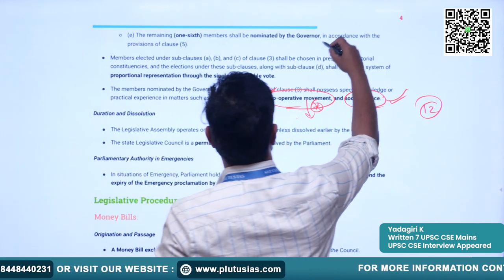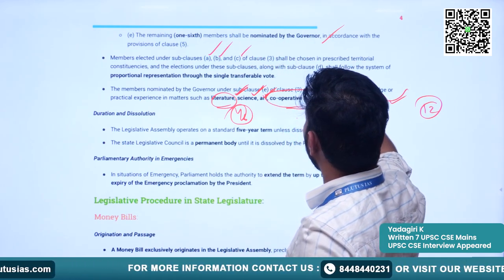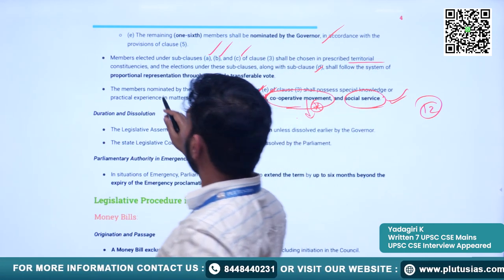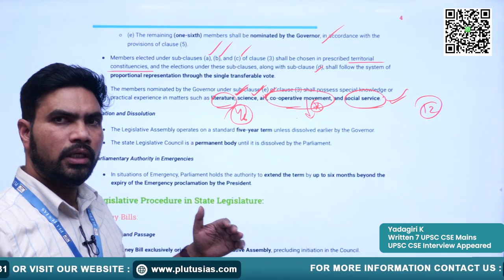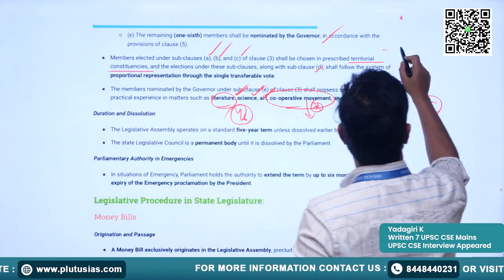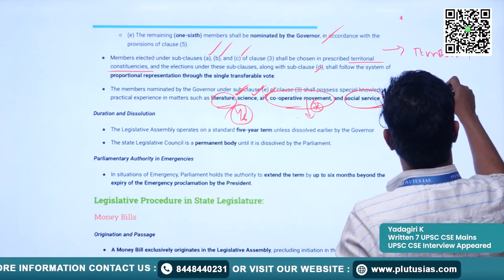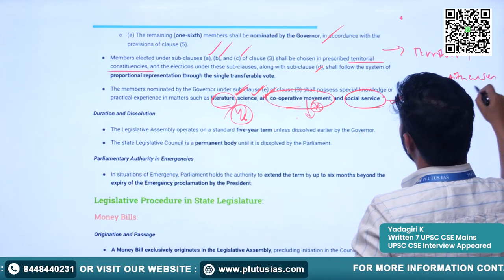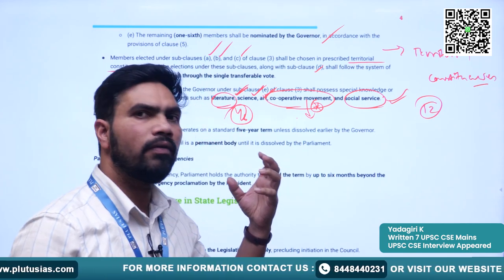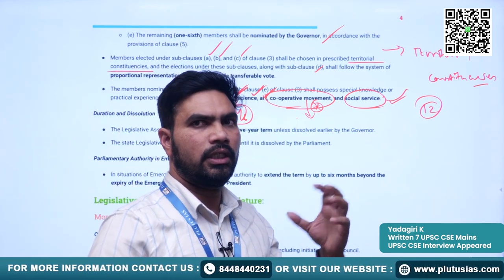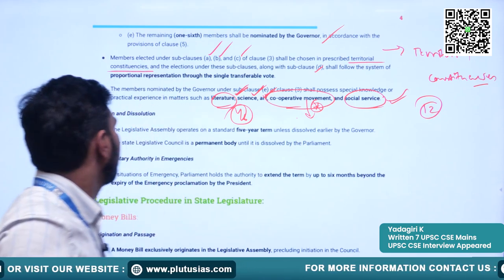For electing members in the various sub-categories, there is a system of territorial constituencies. Except for members nominated by the governor, all other members represent a particular territorial constituency — such as a teachers' constituency or a graduates' constituency — and the elected representatives represent that particular constituency.